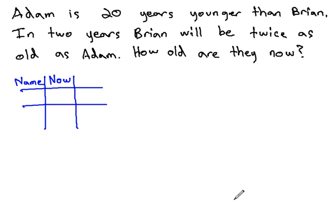In this problem, we're looking at Adam, who is 20 years younger than Brian. In two years, Brian will be twice as old as Adam, and we want to know how old are they now. First, let's fill in the names, Adam and Brian. We'll use A and B.